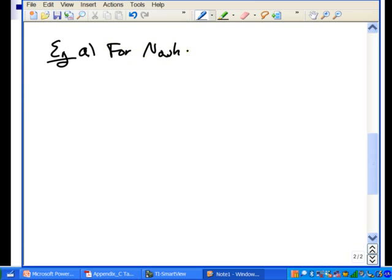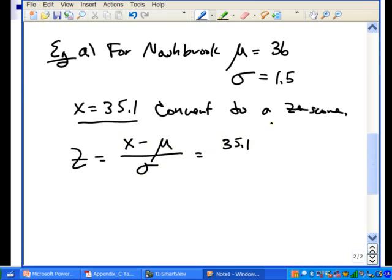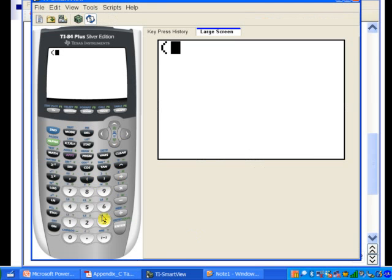In part A, for Nashbrook, the mean is 36 inches and the standard deviation is 1.5 inches. Last year they received x equals 35.1 inches of snow. What we want to do is convert this to a z-score. That'll tell us how many standard deviations above or below the mean this amount of snowfall was. Remember it's x minus μ over σ. X is 35.1, minus μ which is 36, divided by σ of 1.5. Let's compute that now.